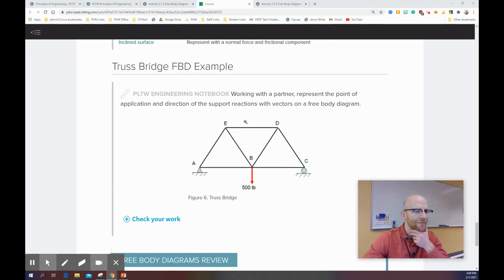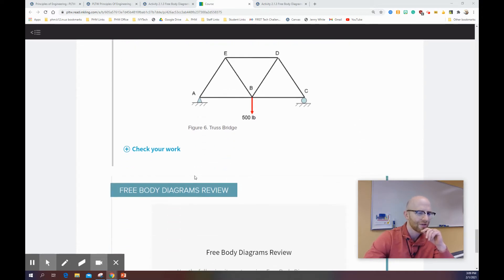This is a free body diagram for a truss bridge. So it does say working with a partner represent the point of application and direction of the support reactions with vectors on the free body diagram. So it's talking about member A to E, E to B, B to D, C to C, D to C, all this stuff, B to C, A to B, those kinds of things.